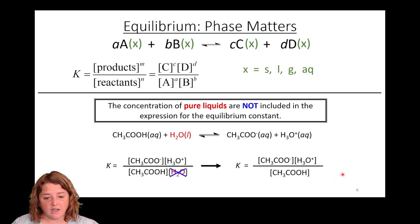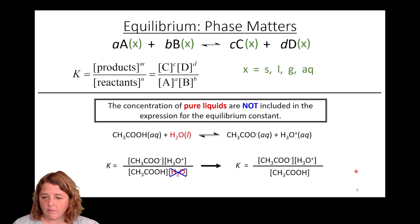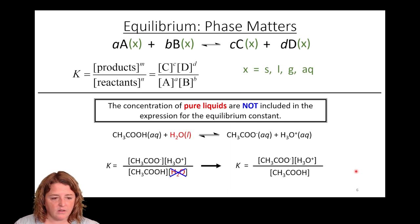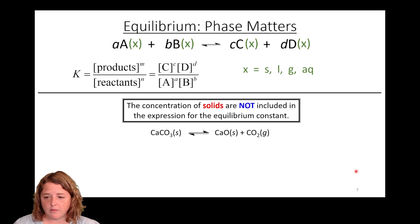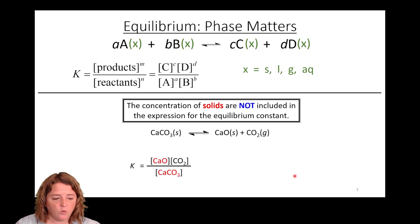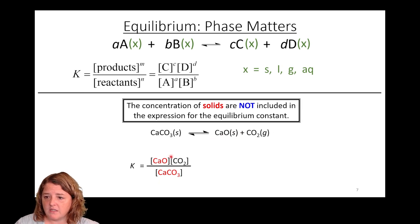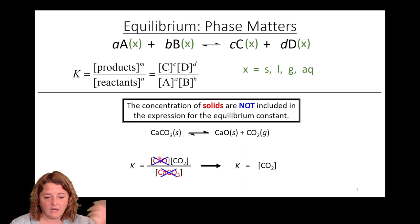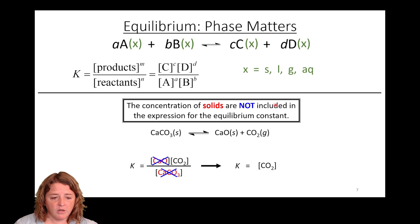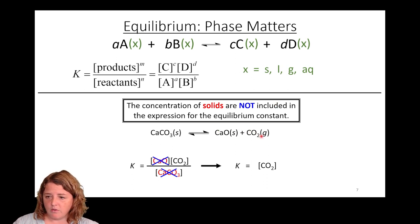We're going to report unitless values for the equilibrium constant. Same thing with solids. So for the calcium carbonate example, the equilibrium constant is products over reactants: calcium oxide and carbon dioxide over calcium carbonate — but those solids we're going to ignore. So the equilibrium constant for this reaction would just be the amount of CO2 present at equilibrium.